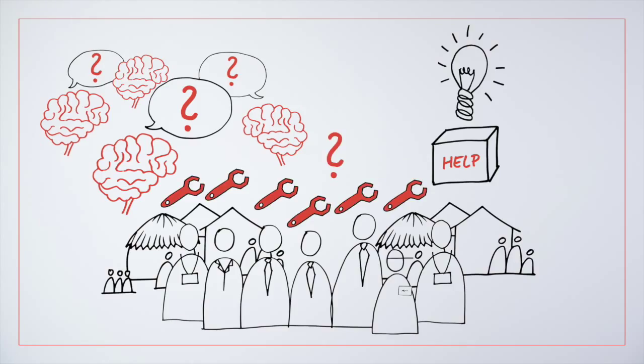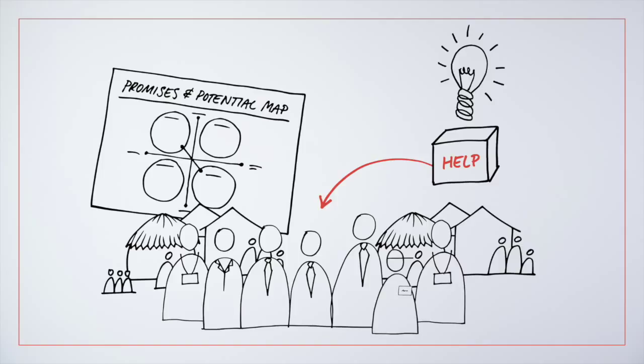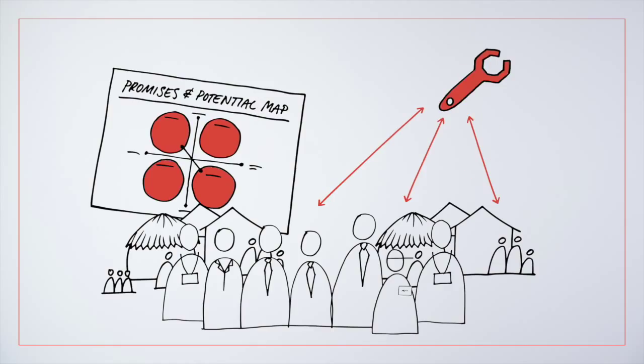The Promises and Potential Map is a tool that can help you with this challenge by mapping the relationship between what you do and whom you are doing it for.